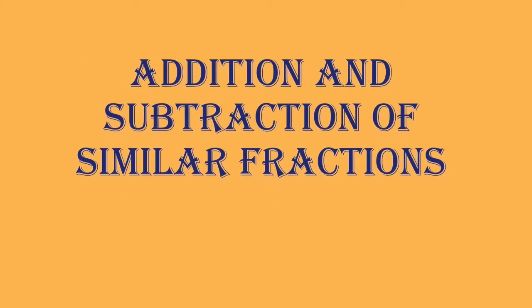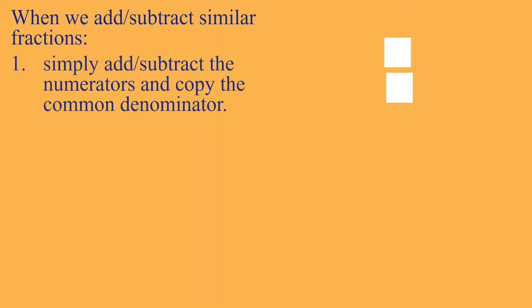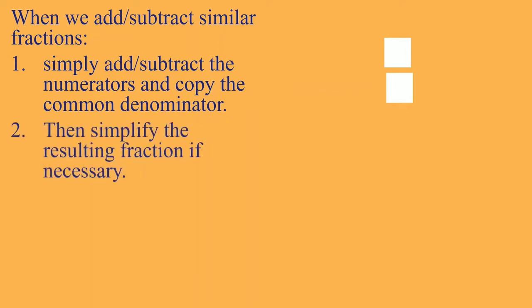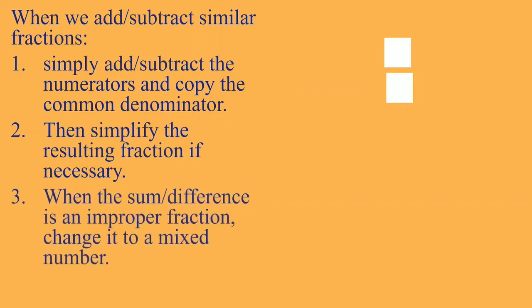So now let us start with the first part of our lesson, which is addition and subtraction of similar fractions. When we add or subtract similar fractions, these are the steps. First, we simply add or subtract the numerators and then copy the common denominator. Then, simplify the resulting fraction if necessary — if it is not yet in its simplest form, we need to simplify. And third, when the sum or difference is an improper fraction, change it to a mixed number. If the numerator is larger than the denominator, we need to change it to a mixed number.